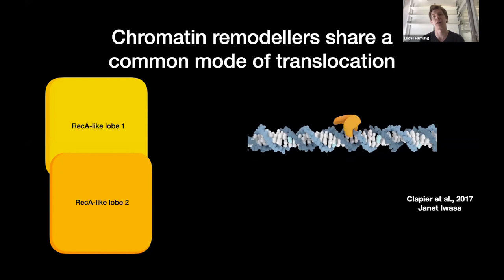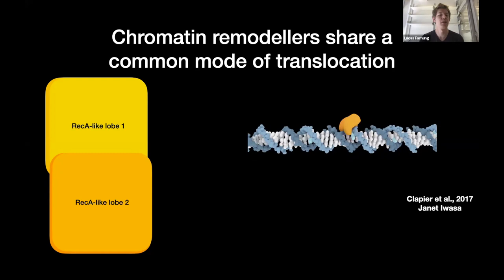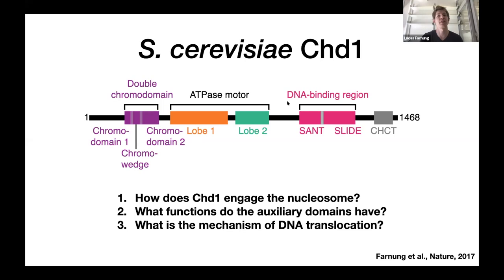So I wanted to understand at a mechanistic level how these chromatin remodelers work and how they are regulated. And the most approachable target at the time was the CHD family of remodelers because they are involved in transcription, which is one of my interests. And additionally, most of its members are single subunit chromatin remodelers. And in yeast, Saccharomyces cerevisiae, the CHD family has only one member, CHD1. CHD1 has a very modular domain architecture, again with this centrally located lobe one and lobe two of the ATPase motor around which regulatory domains are arranged, namely a double chromodomain at the N-terminus and a DNA binding region consisting of the SANT and a SLIDE domain on the C-terminus. So from a structural perspective, it's really an ideal model system to study the process of chromatin remodeling.